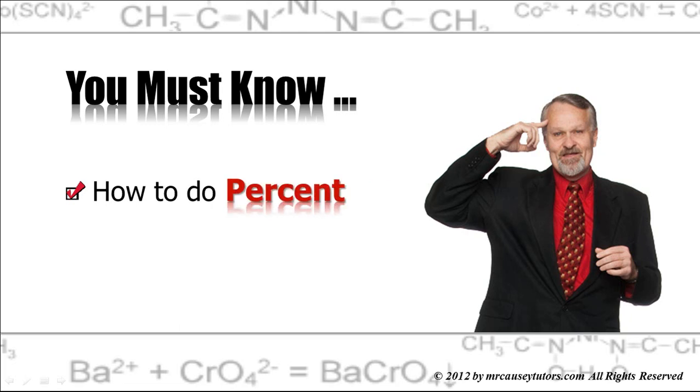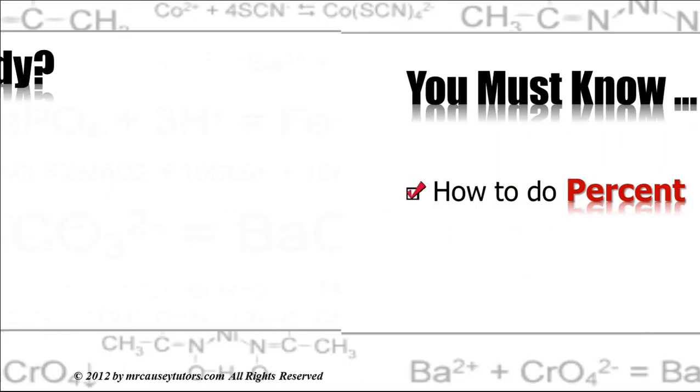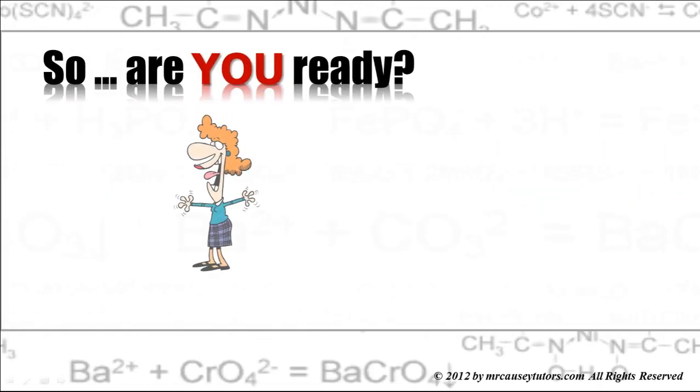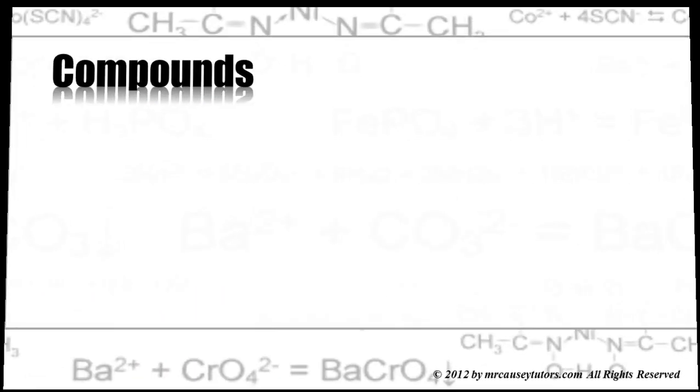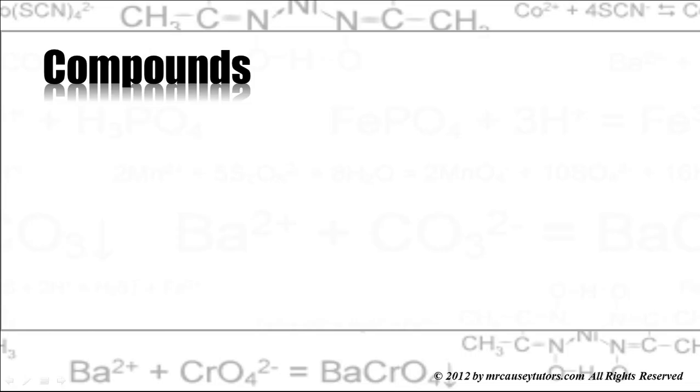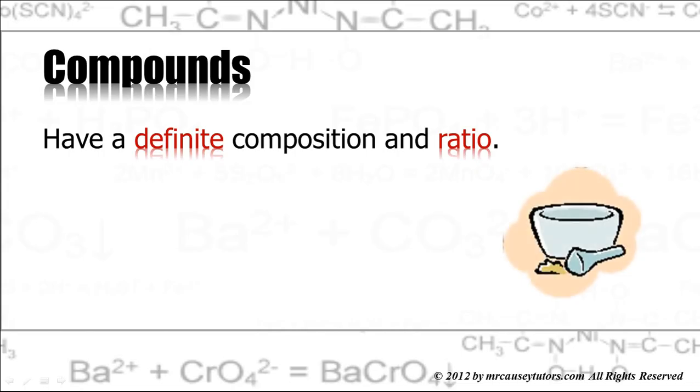And you need to know how to do a percent. So are you ready? Let's get started. One of the first things we want to talk about is compounds. And some things we need to know about compounds is that they have a definite composition and a definite ratio. And this has been determined by the law of definite composition and the law of multiple proportions. These two laws determined in the 18th century help us to understand that compounds are always going to be the same.